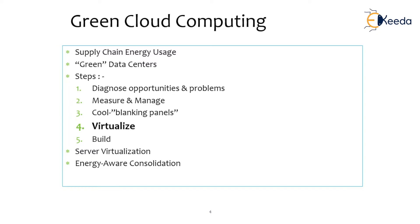Data centers are the backbone of cloud computing. The data center housing the clouds uses a lot of energy. Data centers are facilities that house computer systems and their related components. The power consumed by data centers mainly constitutes the power required to run the actual equipment and the power used by devices to cool the equipment. To cool the system in the data center, precision air conditioners are used that control temperature and humidity throughout the day and can also be managed remotely.